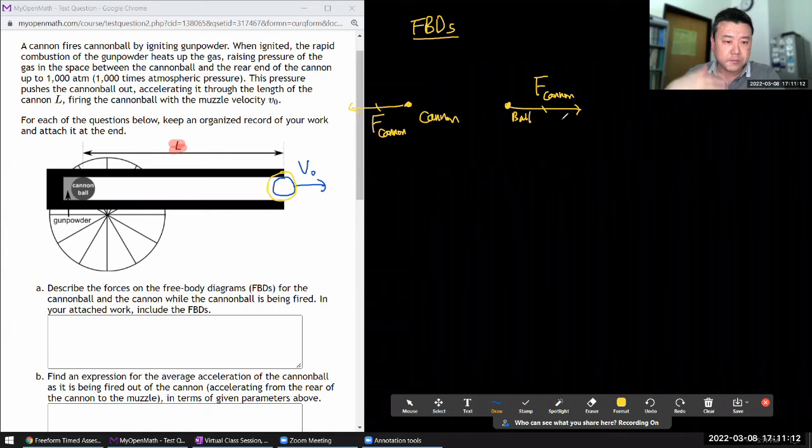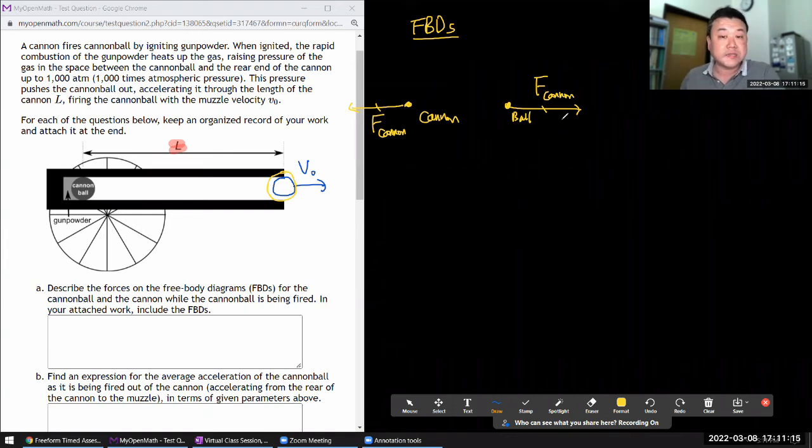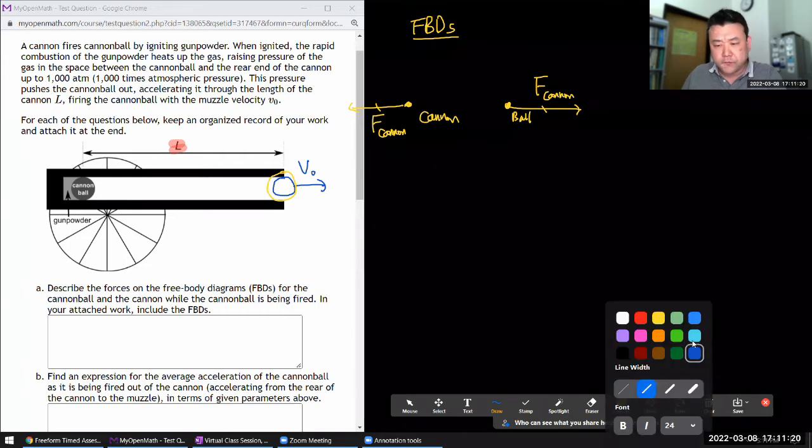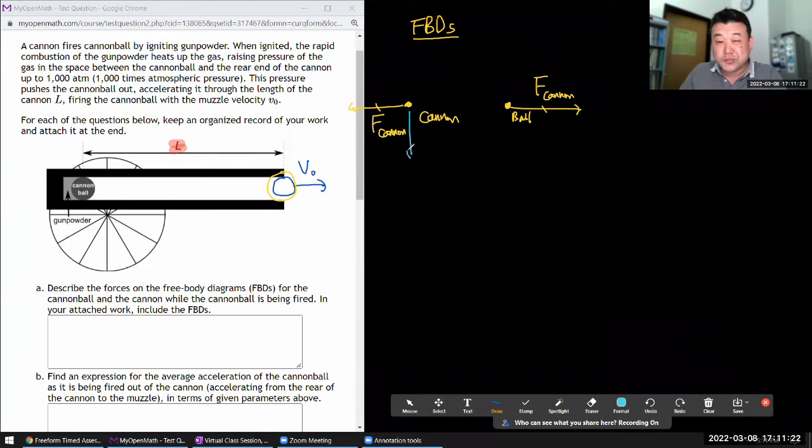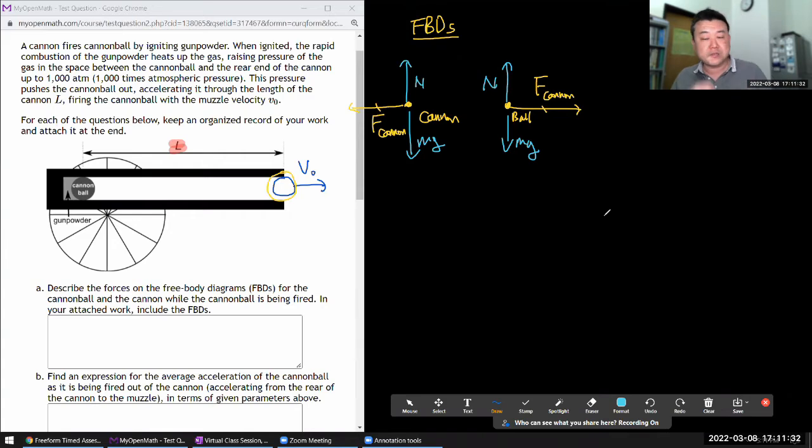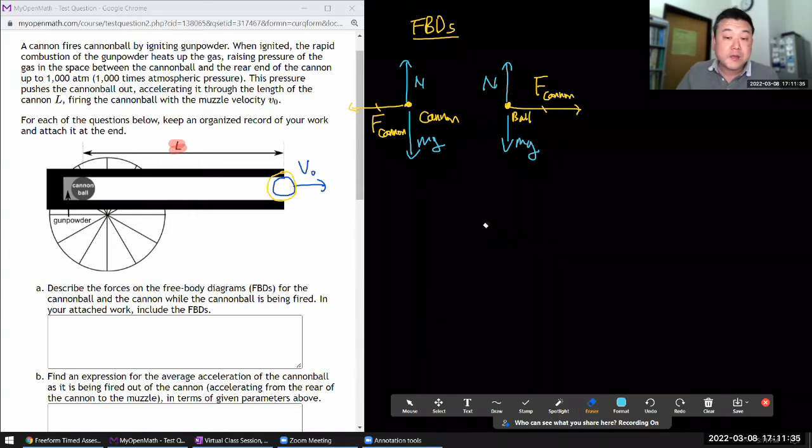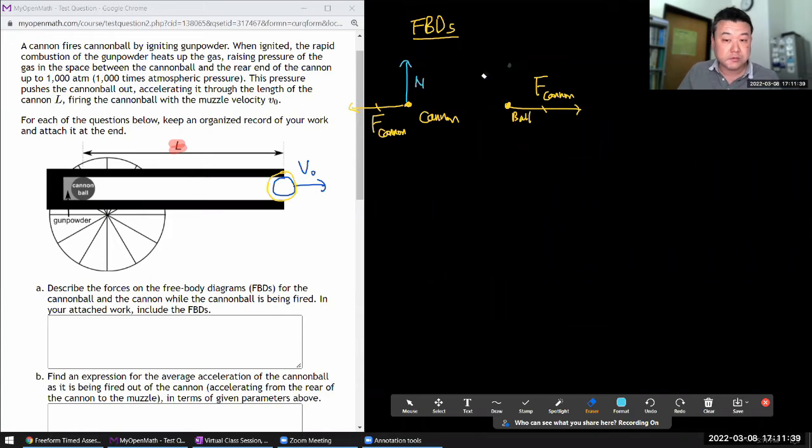If these are the only forces you drew then that's fine. While the cannonball is being fired this is the most significant forces. If you somehow drew additional forces like gravity and normal force, as long as you drew them in such a way that they cancel each other out that's fine too. In terms of the simplest free body diagram this would be just two forces, reaction force pairs.